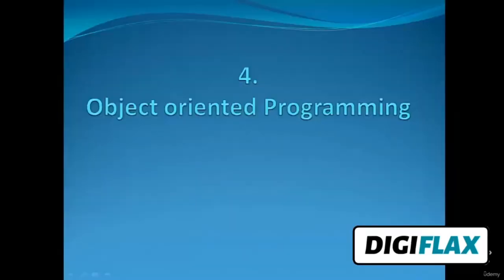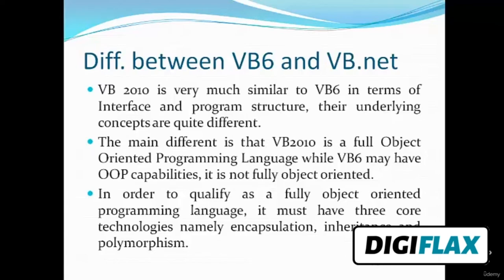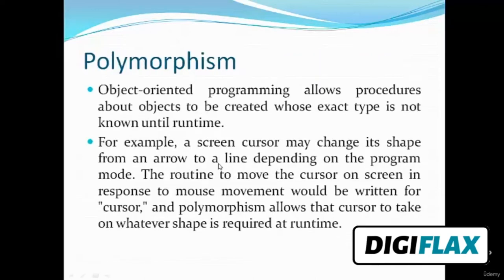Welcome friends. In this video tutorial we will learn about object-oriented programming. Let's first see the difference between VB6 and VB.NET. VB 2010, which is a VB.NET platform, is very much similar to VB6 in terms of interface and program structure. However their underlying concepts are quite different. The main difference is that VB 2010 is a full object-oriented programming language, while VB6 is not fully object-oriented. To qualify as fully object-oriented, a language must have three core technologies: encapsulation, inheritance, and polymorphism.